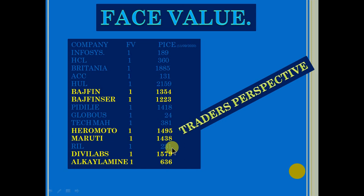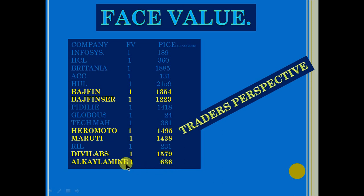When RIL is 231 with face value of 1 and 2310 with face value of 10, it appears expensive but it is not. Between Divis Lab and Alkylamine — both are in the pharma sector — Alkylamine is such a terrific stock. With a face value of 1, it would have been 636; it actually has a face value of 2. And with Divis Lab, just double it up and you will arrive at the comparable figure.